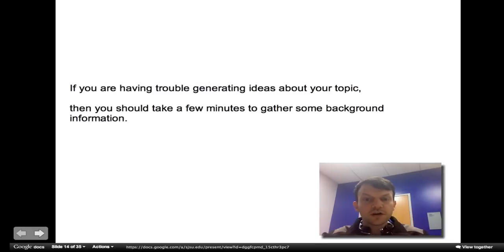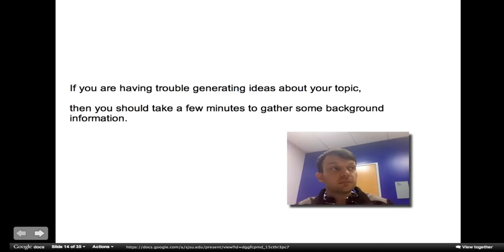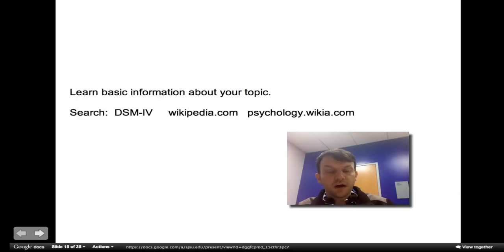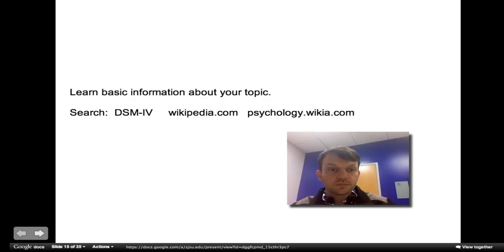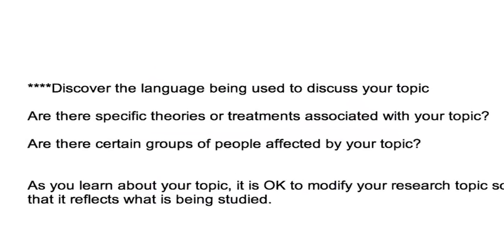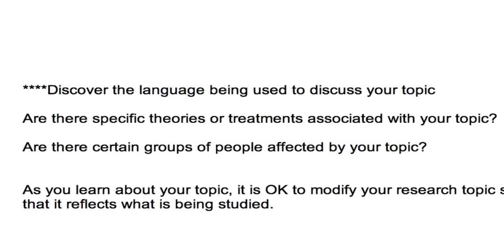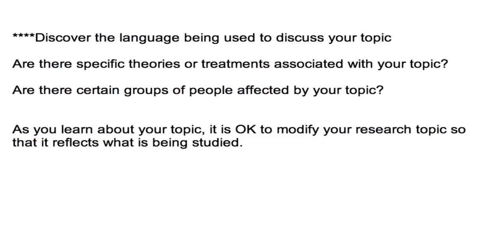If you are having trouble generating ideas about your topic, then you should take a few minutes to gather some background information. You can learn basic information about your topic by searching the DSM, or simply going to Wikipedia, or even checking out psychology.wikia.com. You want to discover the language that's being used to discuss your topic. Some other background information might be: are there specific theories or treatments associated with your topic? Are there certain groups of people affected by your topic? As you learn about your topic, it is okay to modify your research topic so that it reflects what is being studied.